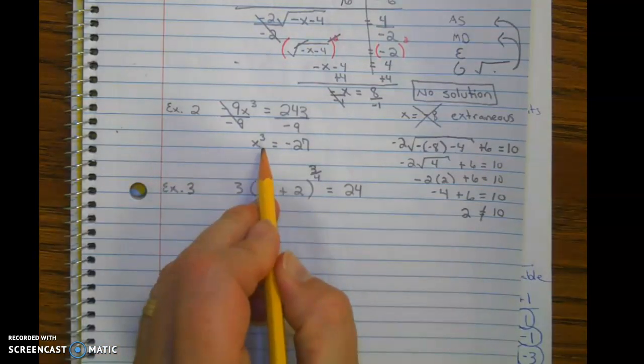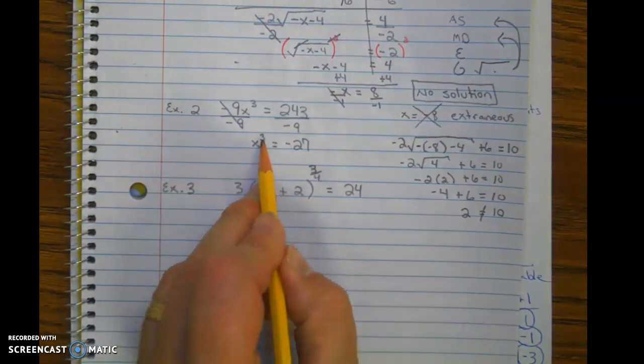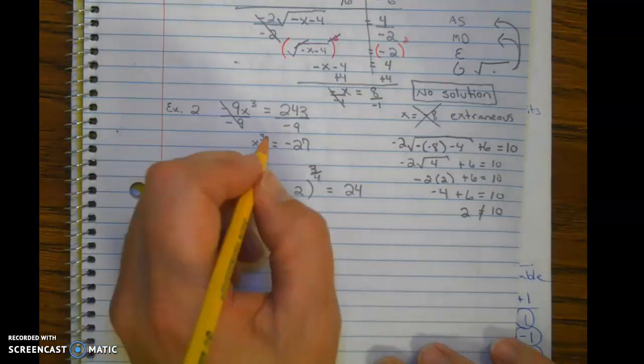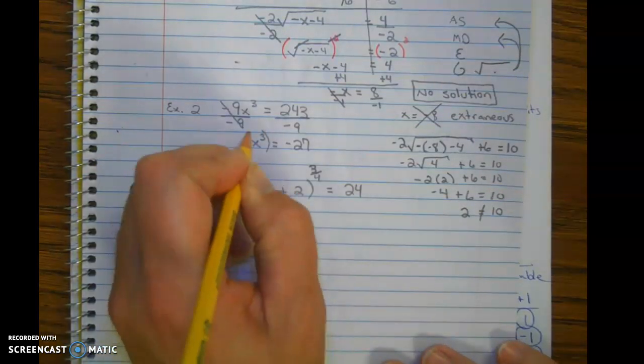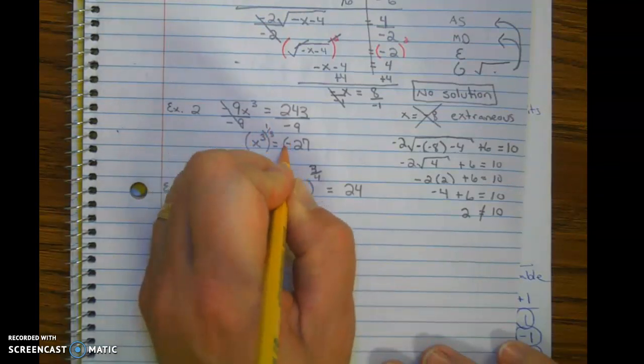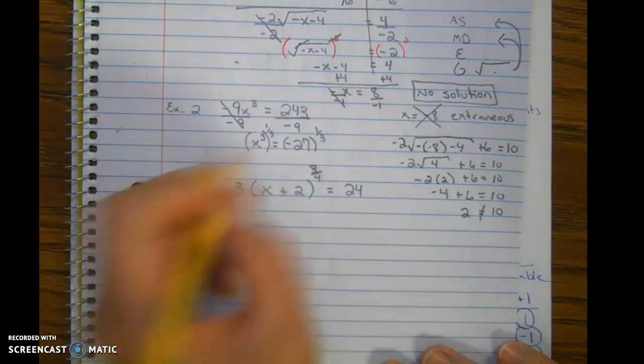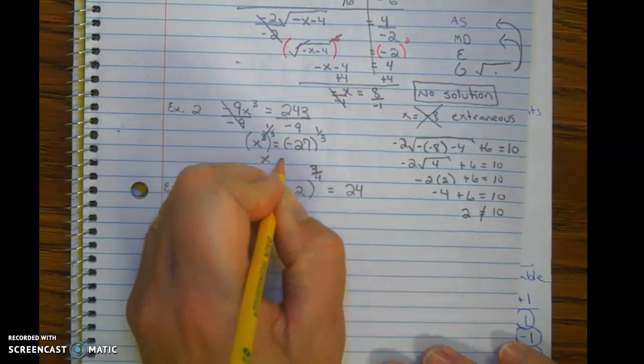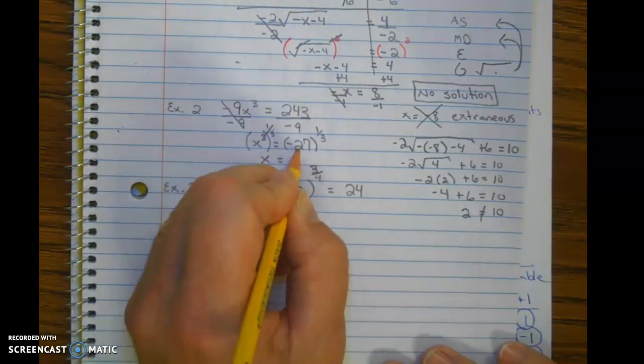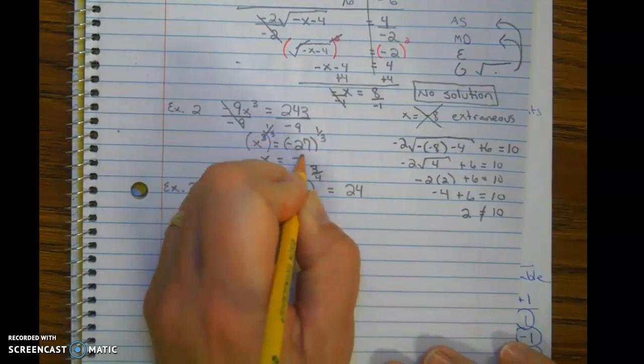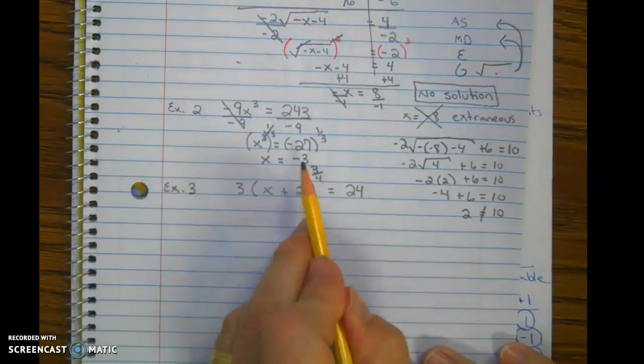And now to undo the cube, we are going to, as I stated before, raise it to the reciprocal. The reciprocal of 3 is 1 over 3. So those cancel. 3 times 1 third is 1. So we have x equals, and then the cube root of negative 27 is negative 3. And negative 3 to the first power is negative 3. Negative 3 times negative 3 times negative 3 is negative 27.